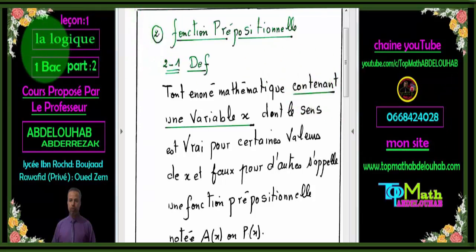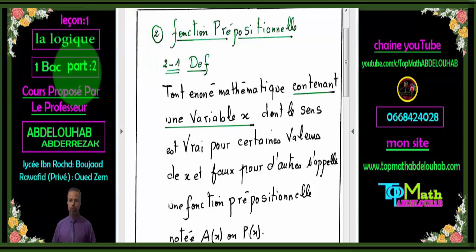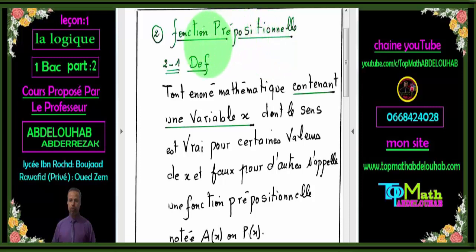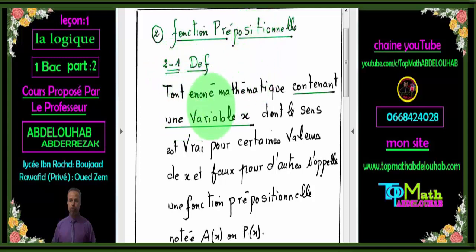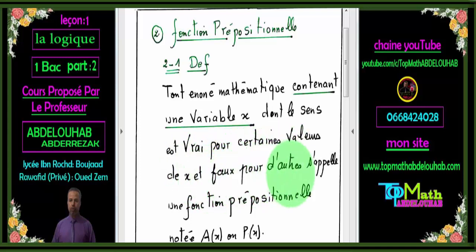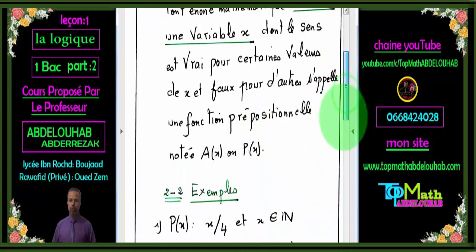On poursuit la première leçon, la logique pour les premières années baccalauréat, dans sa partie numéro 2. Donc on va attaquer dans le petit 2 : fonction prépositionnelle, et quelle est la différence entre une fonction prépositionnelle et une proposition. Définition : tout énoncé mathématique contenant une variable x, dont le sens est vrai pour certaines valeurs de x et faux pour d'autres, s'appelle une fonction prépositionnelle, notée souvent par a(x) ou p(x).